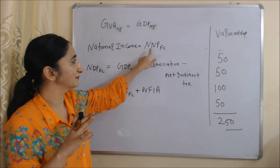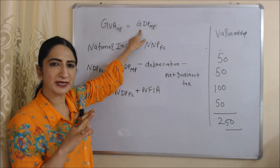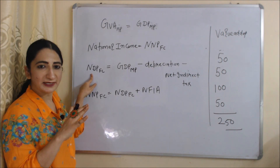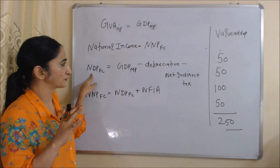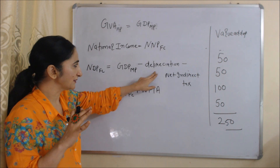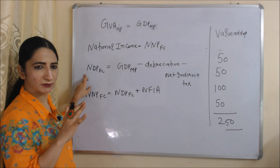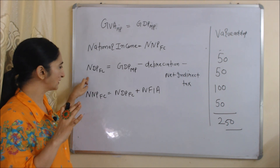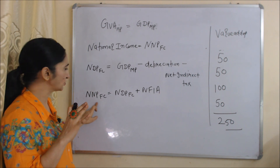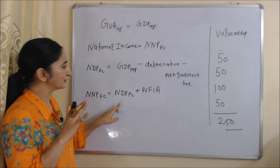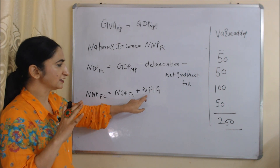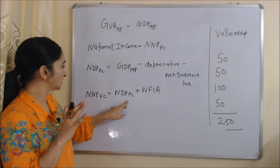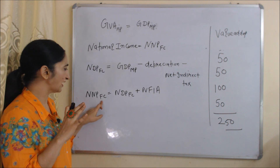So now we have GDP at MP, but we need to calculate national income, which is equal to NNP at FC — Net National Product at Factor Cost. First, we calculate NDP at FC: NDP at FC (Net Domestic Product at Factor Cost) = GDP at MP minus Net Indirect Tax minus Depreciation. Then, to get NNP at FC, we add Net Factor Income from Abroad to NDP at FC. NNP at FC is our national income.